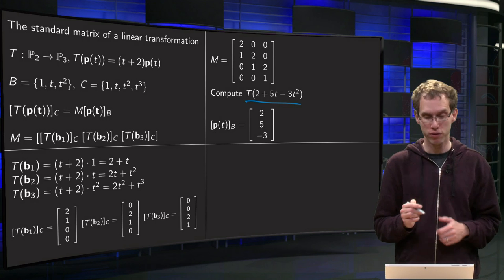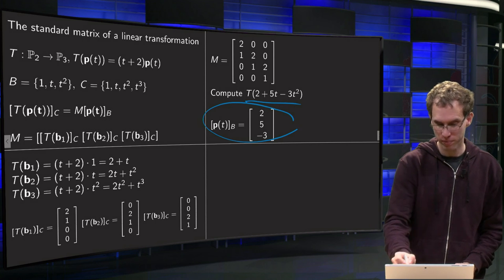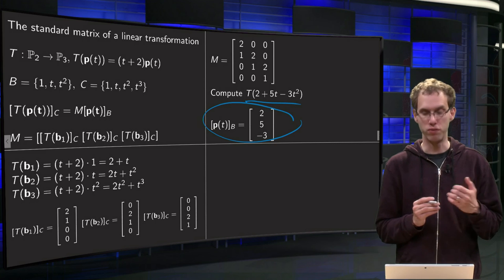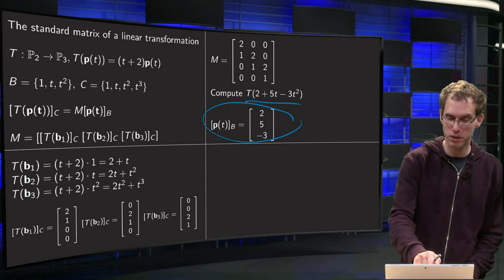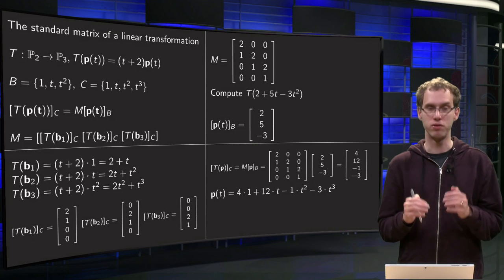So how can we do that? First we find the coordinate vector in B which is (2, 5, -3).